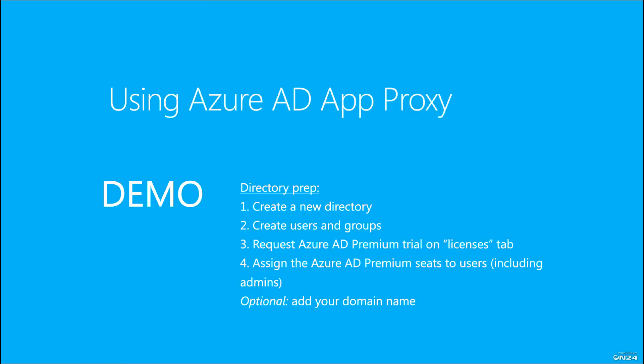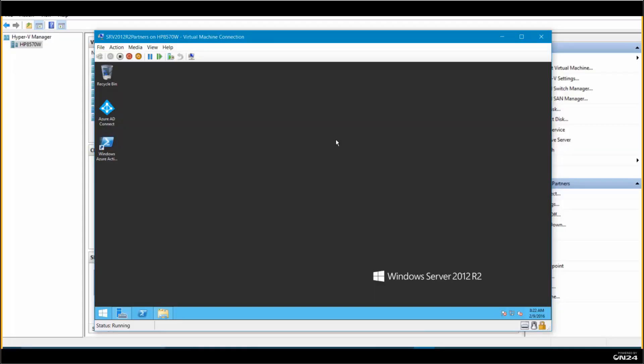Let's go through the demo. To make this demo work, I did some preparation. I created an Active Directory on-premises using a domain controller and created some users and groups on-premises. Then I requested an Azure Active Directory Premium trial for these users. You can optionally add and verify your own Internet domain name in Azure Active Directory.